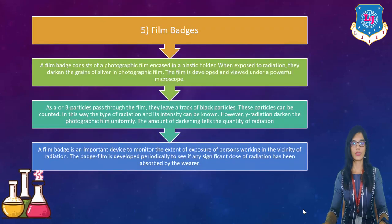Our next one and the last one is film badges. So a film badge consists of photographic film encased in a plastic holder. When exposed to radiation they darken the grains of silver in photographic film. This particular film is developed and viewed under power of a microscope. And as alpha or beta particle pass through the film they will leave a track of black particles. This particular particles can be counted and in this way the type of radiation and its intensity can be known. However gamma radiation darken the photographic film uniformly and the amount of darkening tells the quantity of the radiation. So a film badge is an important device to monitor the extent of exposure of the persons working in the vicinity of radiation. And the badge film is developed periodically to see if any significant dose of radiation has been absorbed by the wearer or not.